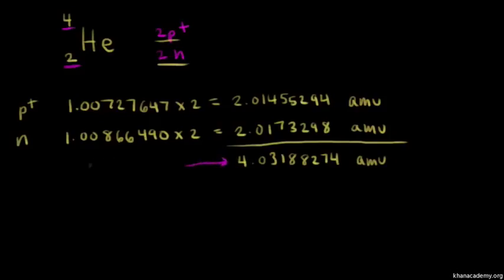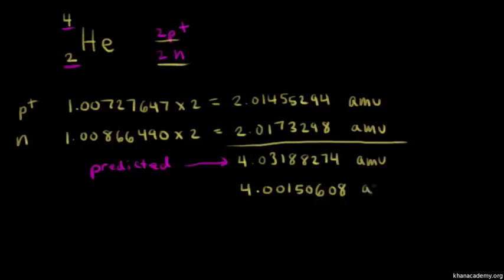Let me go ahead and write this — this is the predicted mass. The actual mass is different; they're not the same number. The predicted number is higher than the actual mass.